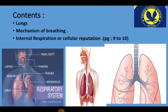Today we are covering these topics in this lesson: our lungs, mechanism of breathing, and internal respiration or cellular respiration. We have covered these four parts previously — larynx, trachea, and bronchi. When we take our breath, the air will go to the lungs through the larynx, trachea, and bronchi.